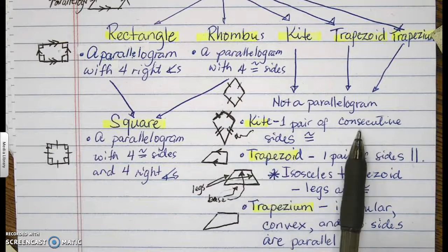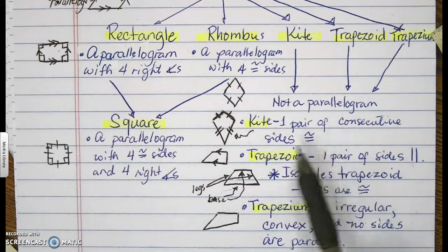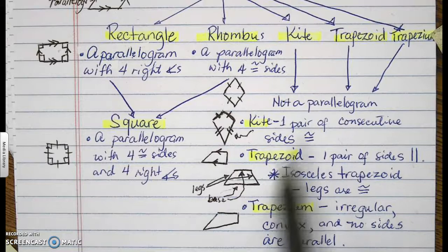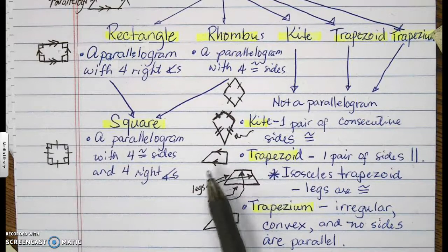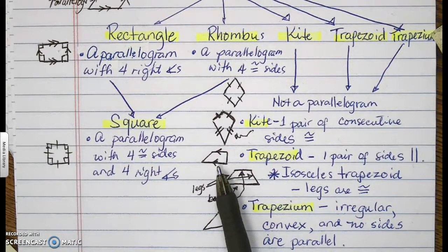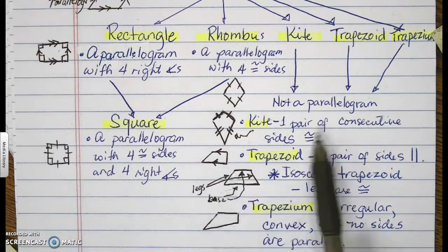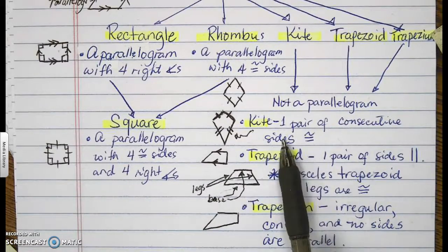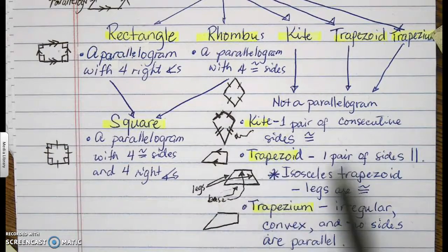It has to be the consecutive sides. The difference between this and the trapezoid is the trapezoid is one pair of opposite sides parallel. This one is a pair of consecutive sides congruent. So I hope you see the difference.